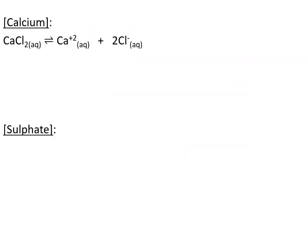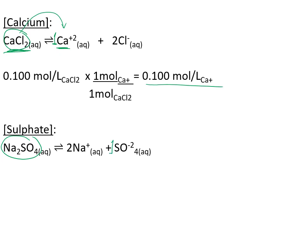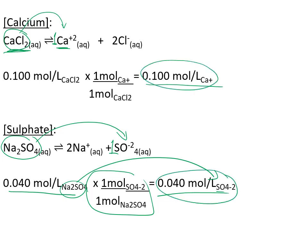Write out the dissociation equations separately to confirm molar ratios. Calcium chloride dissociates in a 1:1 ratio, so the concentration of calcium ions equals the concentration of CaCl₂: 0.1 mol/L. Sodium sulfate also dissociates in a 1:1 ratio for sulfate, so the concentration of sulfate ions equals the concentration of Na₂SO₄: 0.04 mol/L. We have both ion concentrations, but they are currently in separate beakers.